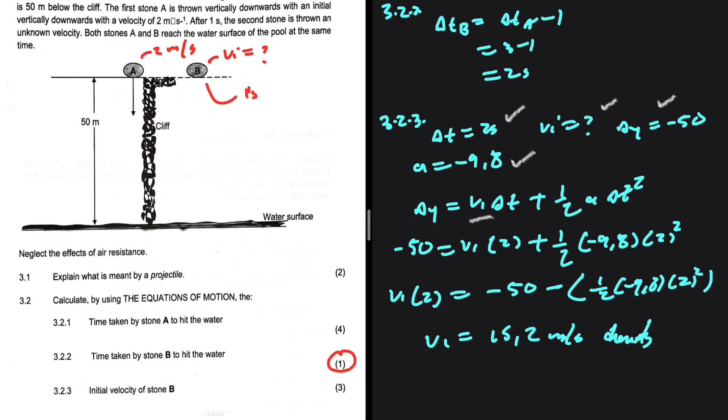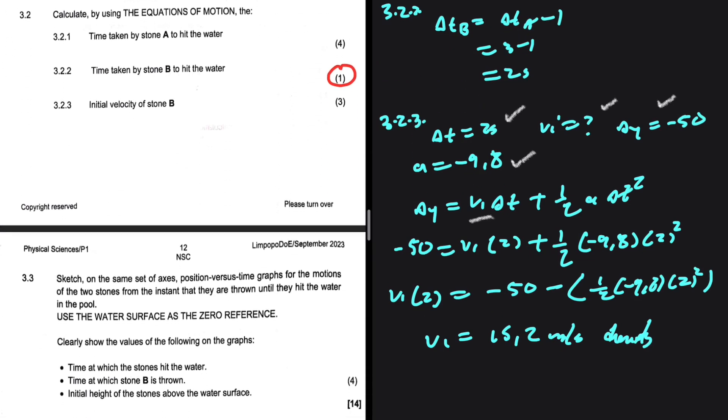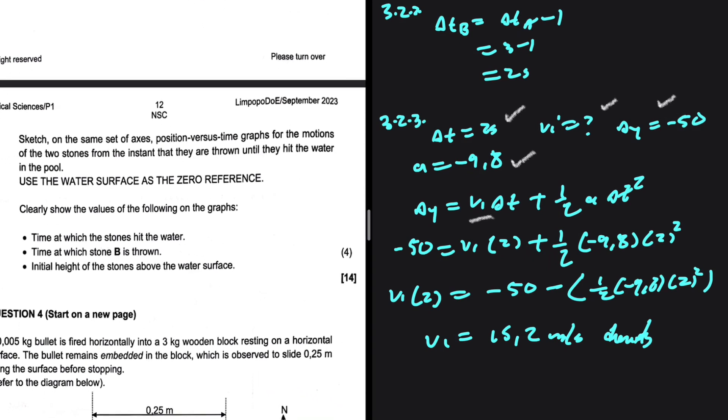The equation says the velocity, so we're supposed to include the direction just like I did there. Let's carry on to the last question, 3.3: sketch on the same set of axes position versus time graphs for the motions of the two stones from the instance that they are thrown until they hit the water in the pool. Use the water surface as the zero reference. Clearly show the release on the graphs: time at which the stones hit the water, time at which stone B is thrown, initial height of the stones above the water surface.